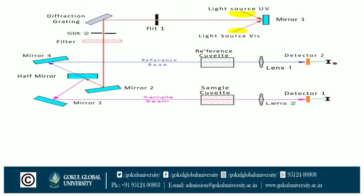In the double beam spectrophotometer diagram, UV light from the source is filtered by filter one, then diffracted by a diffraction grating and directed through mirrors two, three, and four. Here two beams occur: the reference beam passes through the reference cuvette and the sample beam passes through the sample cuvette. Both signals are collected by the detector and converted into the UV spectrum.